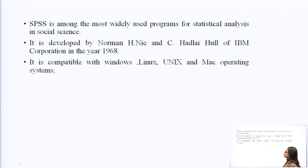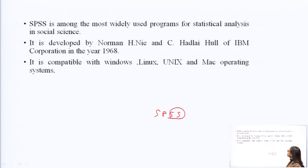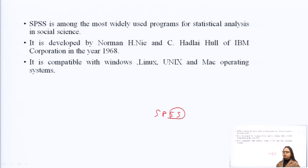SPSS is among the most widely used programs for statistical analysis in social science. Social science here means that when we do any survey related to social science — surveys on health issues, like recently surveying how many people are affected by corona or omicron, or how many students are willing to go to school or college during the pandemic — we can conclude results from this software.